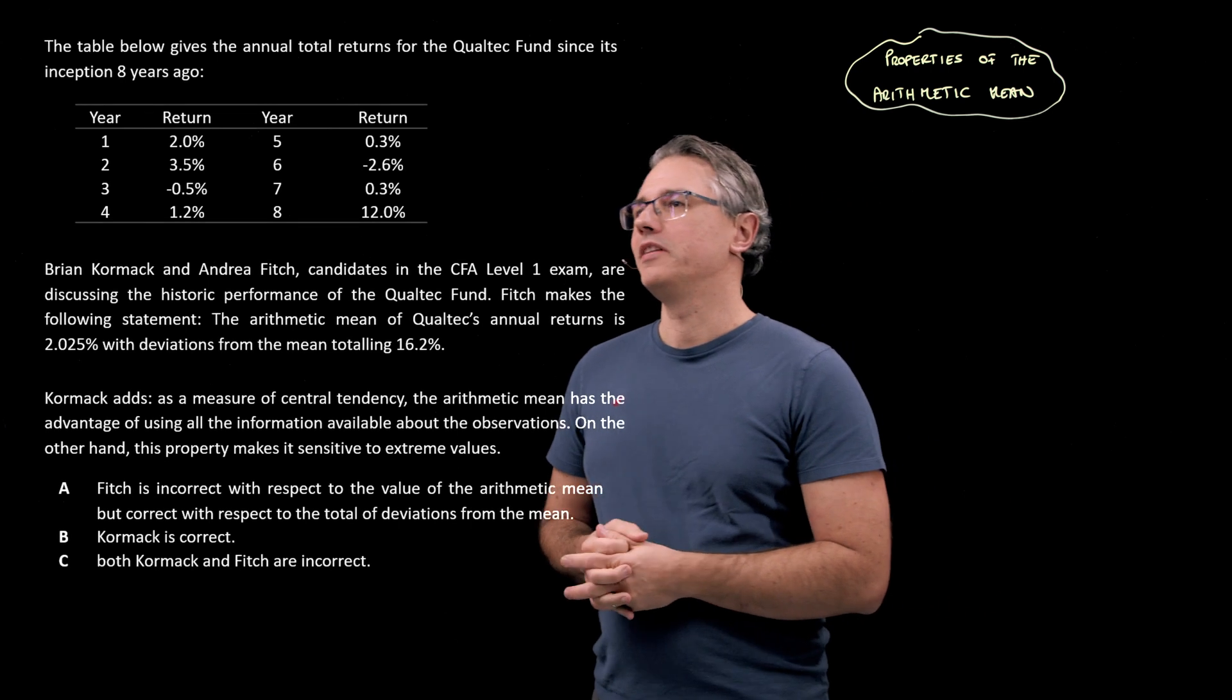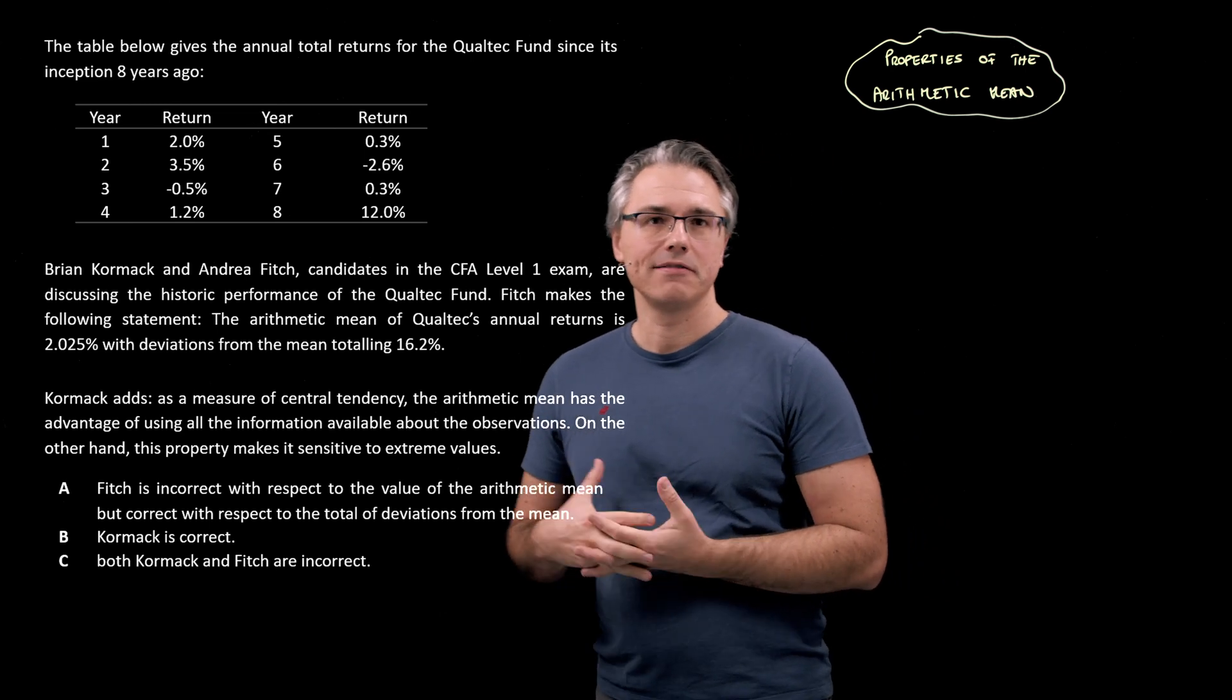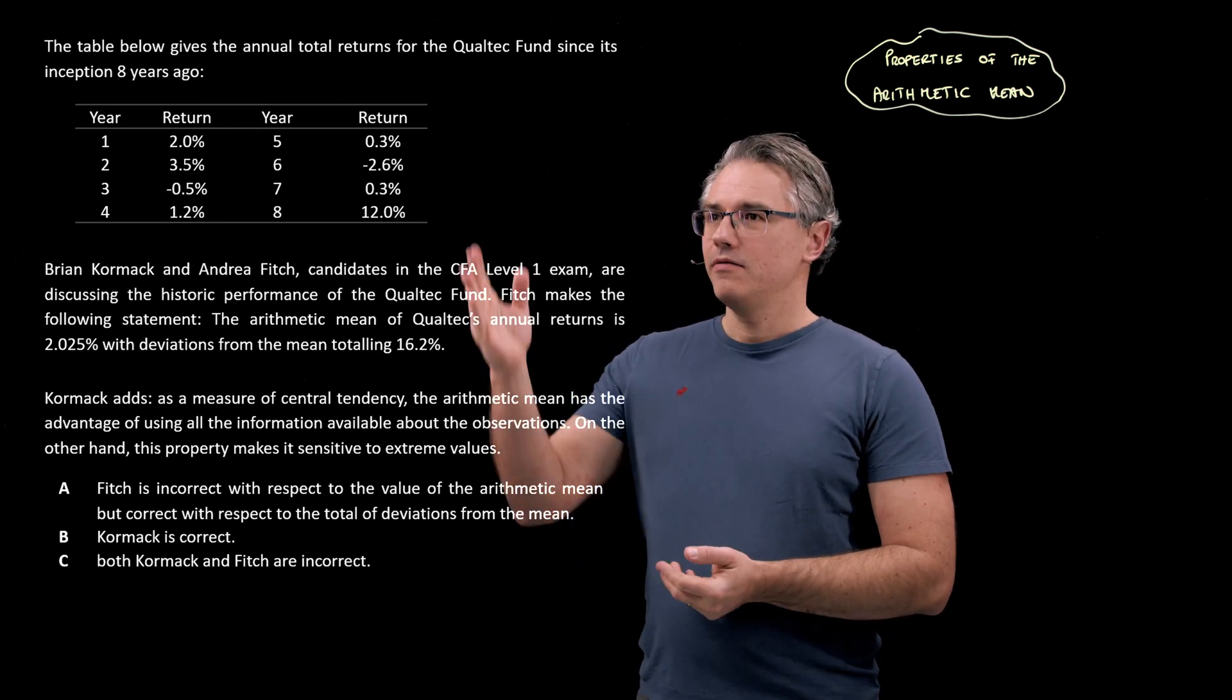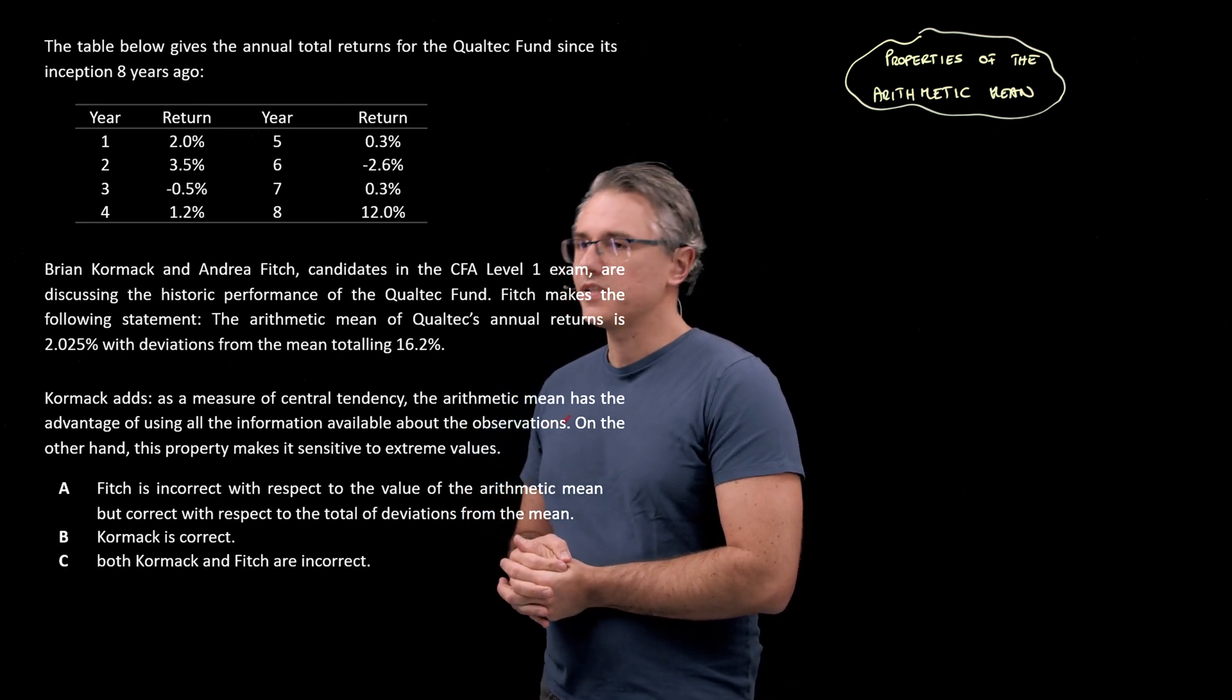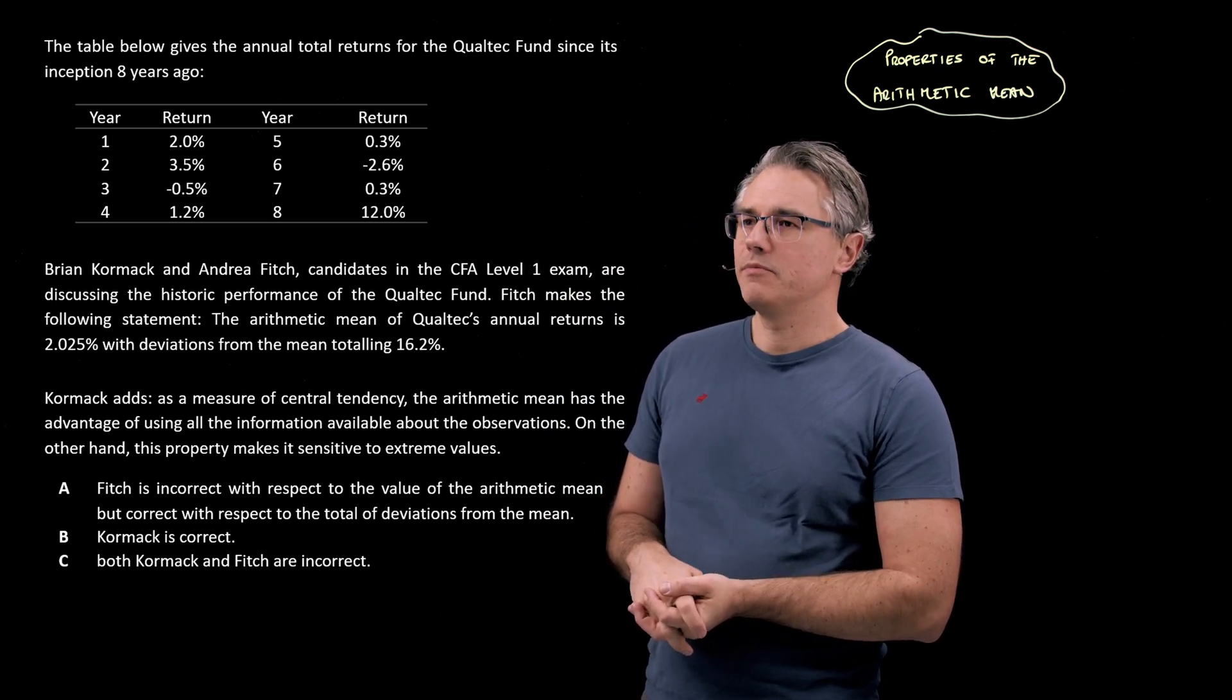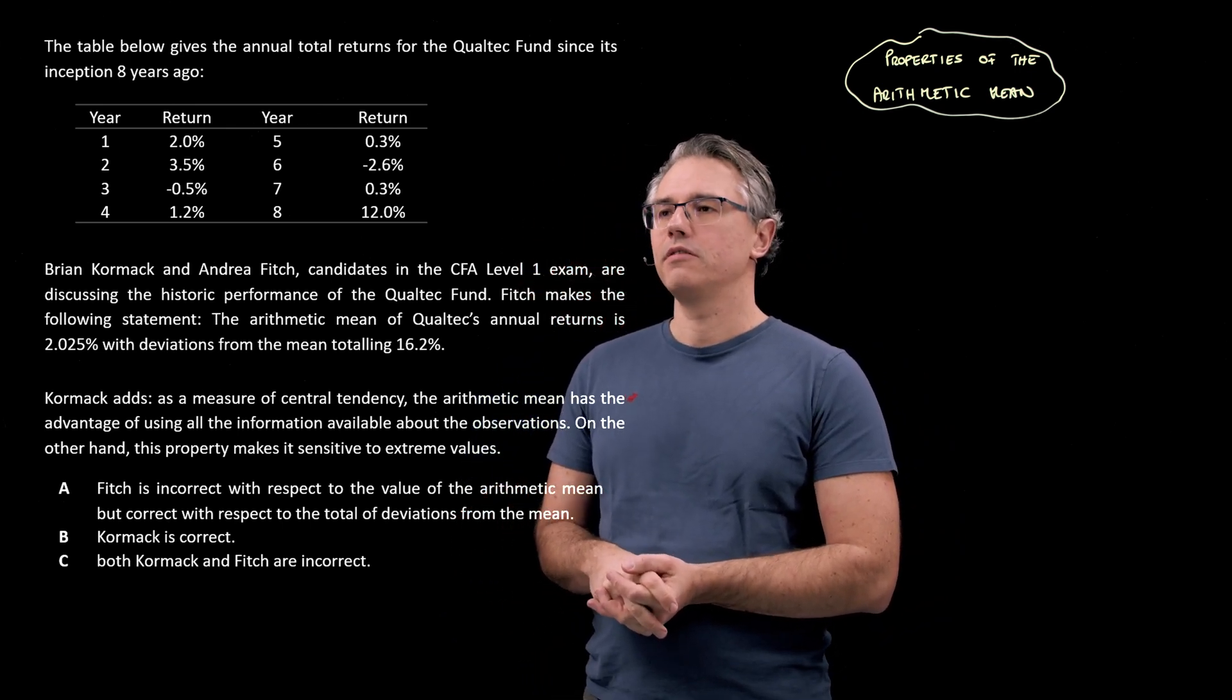So this is the question. The table below gives the annual total returns for the Qualtech fund since its inception eight years ago. This is the same data which I used in the previous question on the mode and the median. So the data is here. Then Brian Cormack and Andrea Fitch, candidates in the CFA Level 1 exam, are discussing the historic performance of the fund.